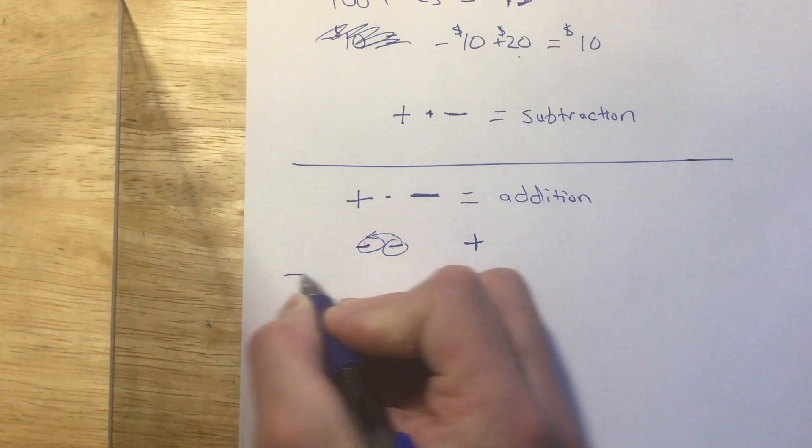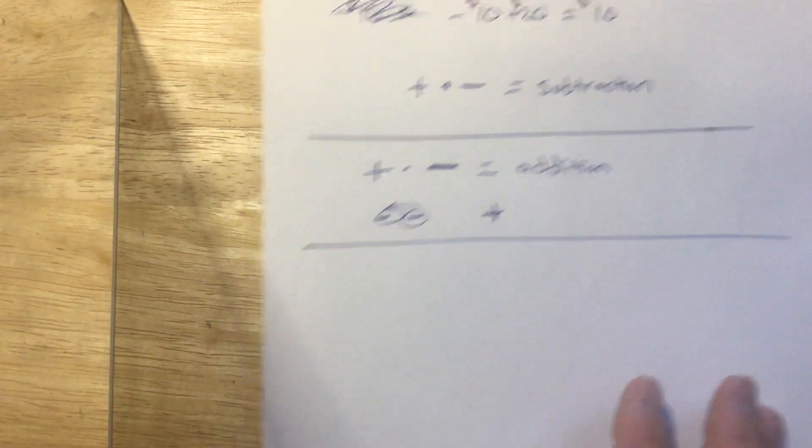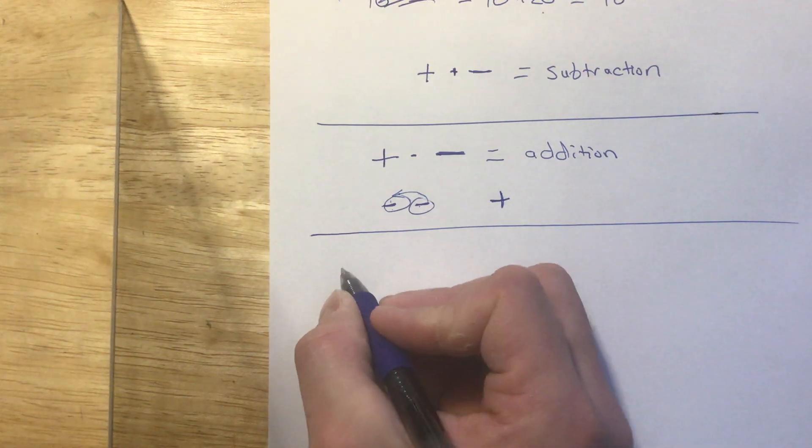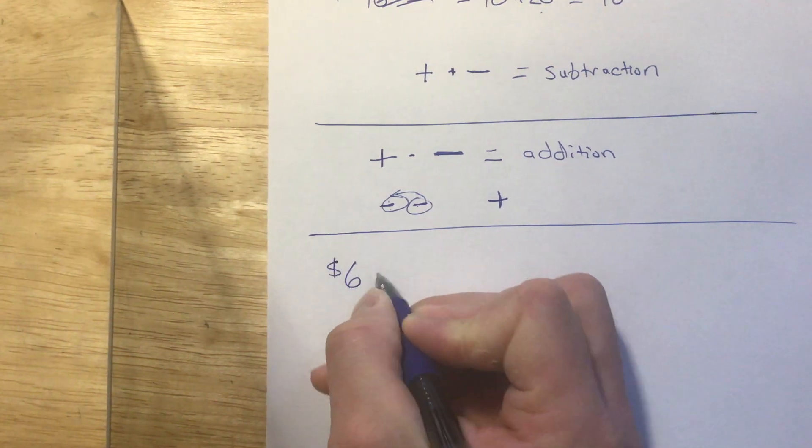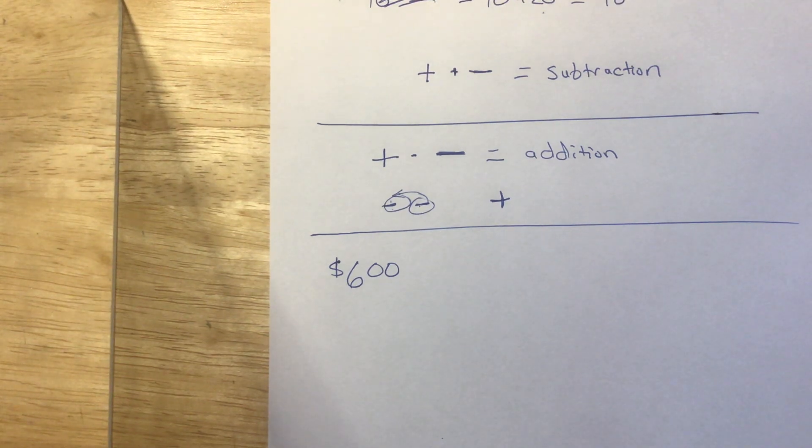Now, tax time comes around. You're an adult, let's say. You've got a job. And Uncle Sam decides to give you a tax refund. And you've got a tax refund of $600. Woo-hoo! $600!